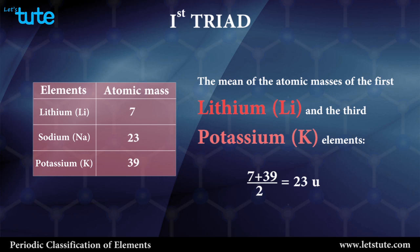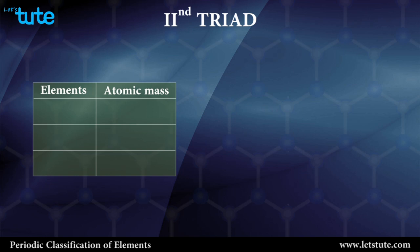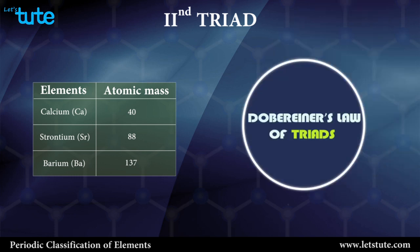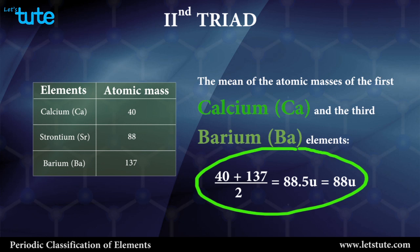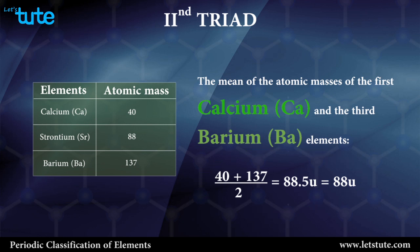Similarly, let us apply Dobereiner's law to the second triad — calcium, strontium, and barium. The atomic mass of calcium is 40, strontium is 88, and barium is 137. By applying Dobereiner's law of triads, we get the mean of the atomic masses of calcium and barium to be (40 + 137) / 2, which equals 88.5, approximately equal to the atomic mass of the middle element, strontium.